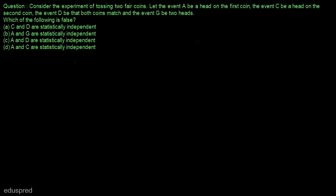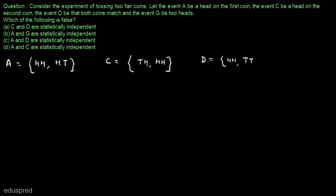Which of the following is false? Event A is head on the first coin, so A = {HH, HT}. The event C is head on the second coin, so C = {TH, HH}. The event D is that both coins match, so D = {HH, TT}. And event G is two heads, so G = {HH}.